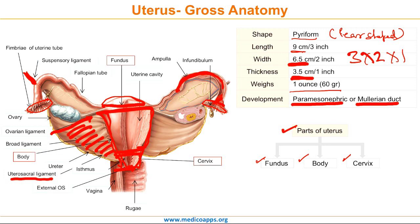Beside these, the lateral fornix. Fornices are the superior portions of the vagina extending into the recesses created by the vaginal portion of the cervix. The cervical canal communicates with the uterine cavity via the internal orifice of the uterus, and with the vagina via the external orifice of the uterus. The internal os is through which the cervical canal communicates with the uterine cavity.